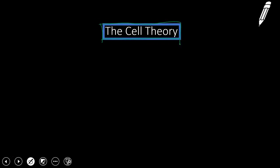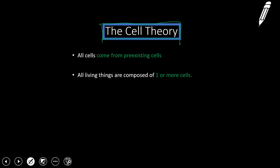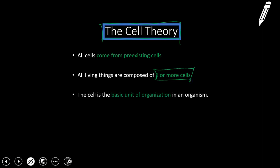And what the cell theory states is: number one, all cells come from preexisting cells. Number two, all living things are composed of at least one or more cells. And number three, the cell is the basic unit of organization in an organism. Let's look at what these mean in a little more detail.